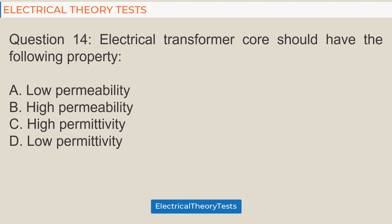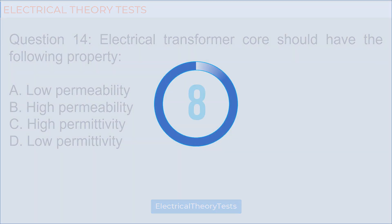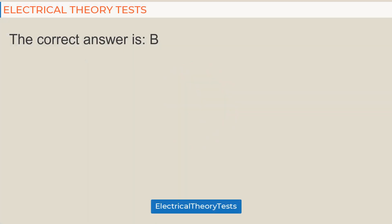Question 14: Electrical transformer core should have the following property: A. low permeability, B. high permeability, C. high permittivity, D. low permittivity. The correct answer is B.